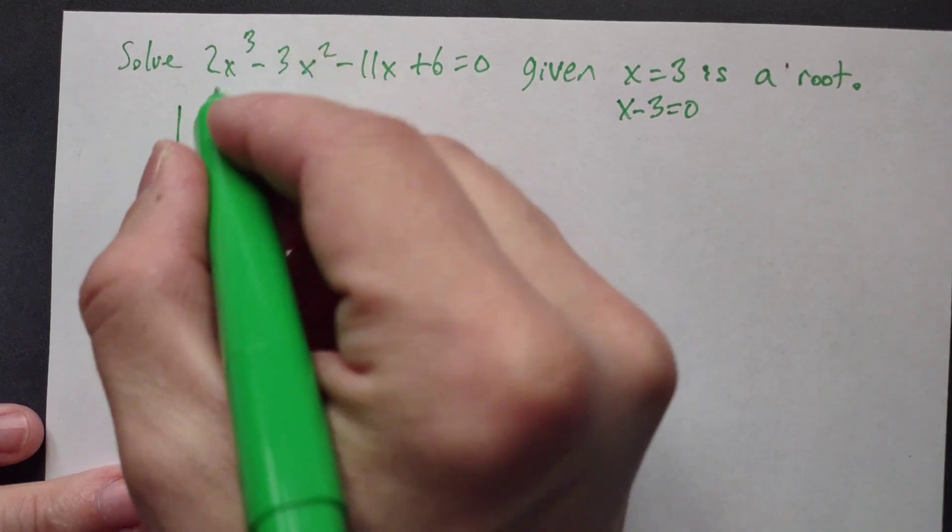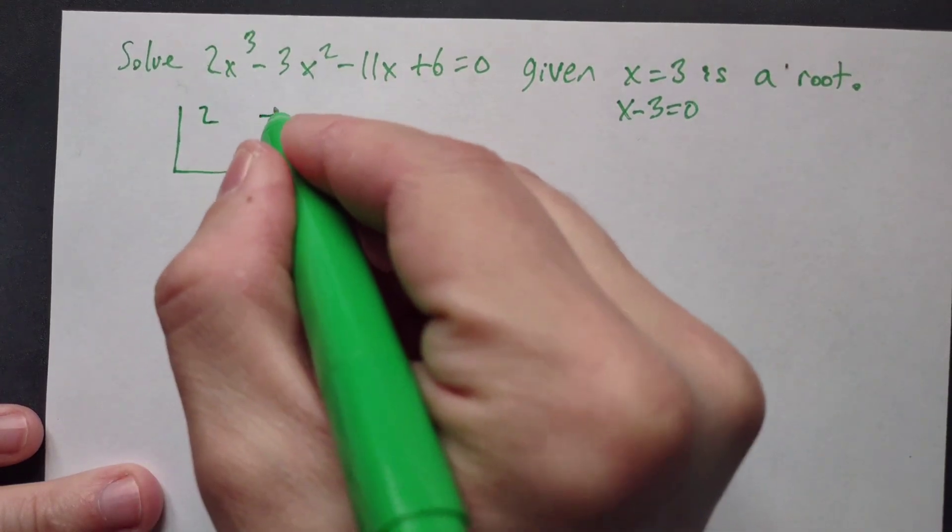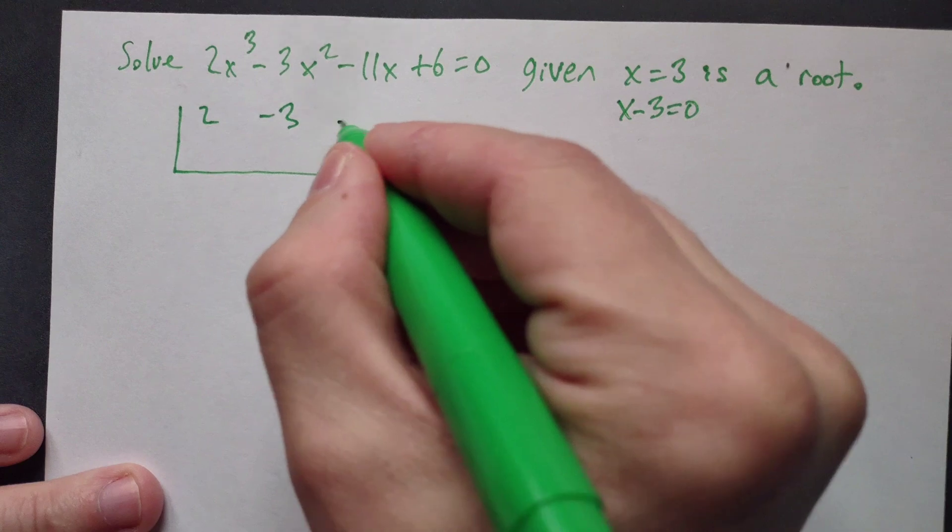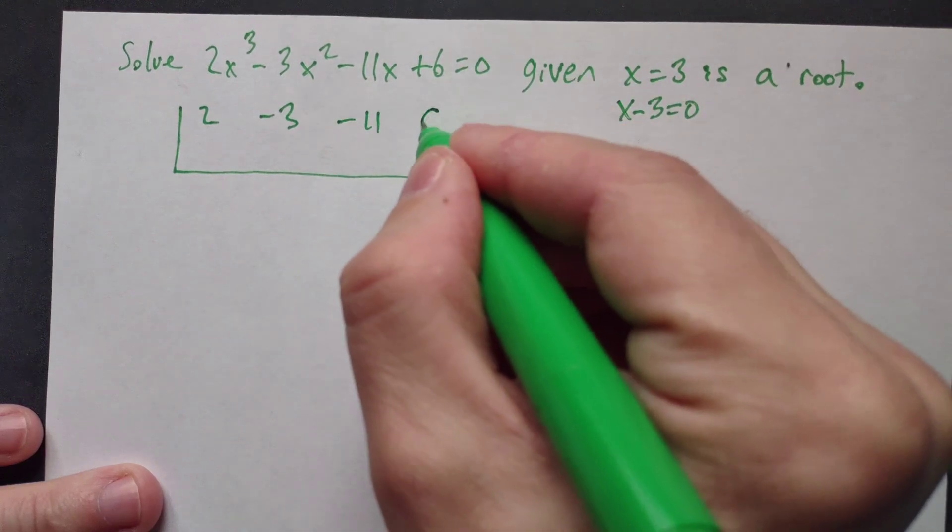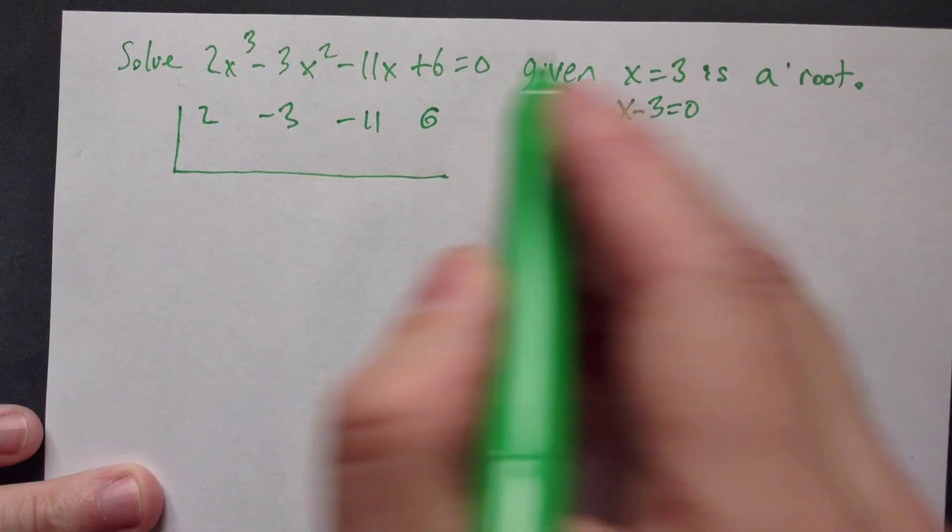We have all the coefficients: x³ is 2, x² is -3, x is -11, and the constant is 6. Then here you place the 3.